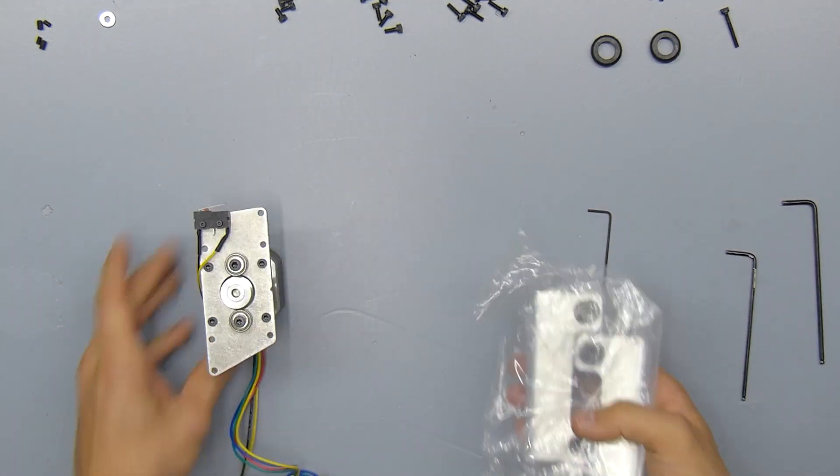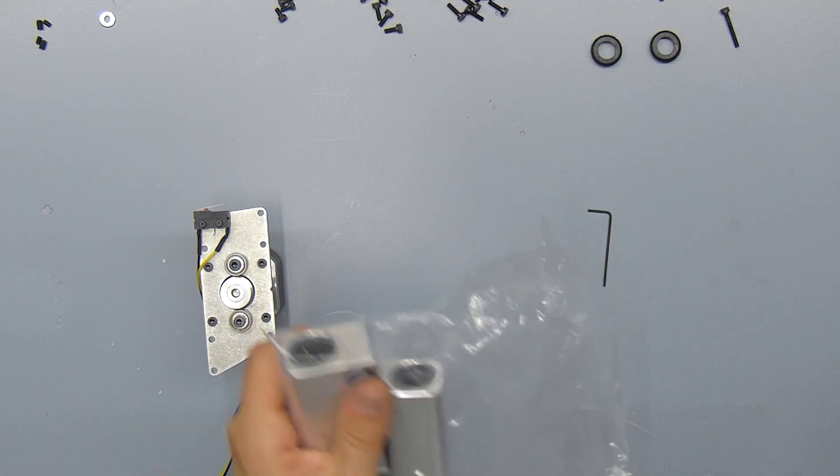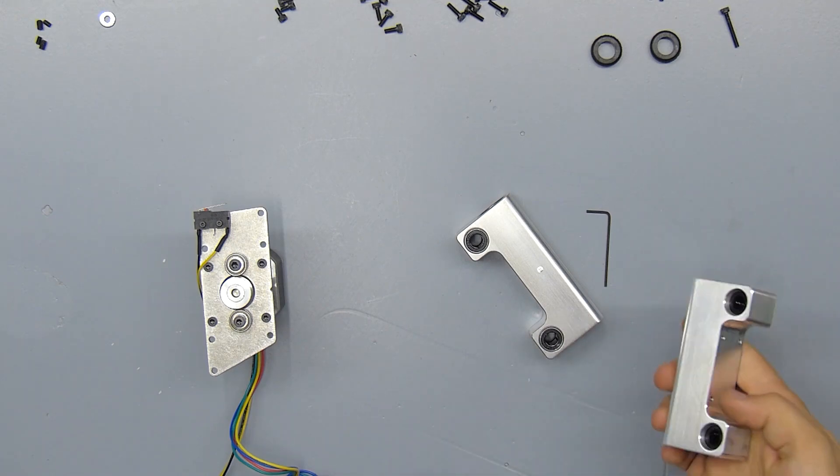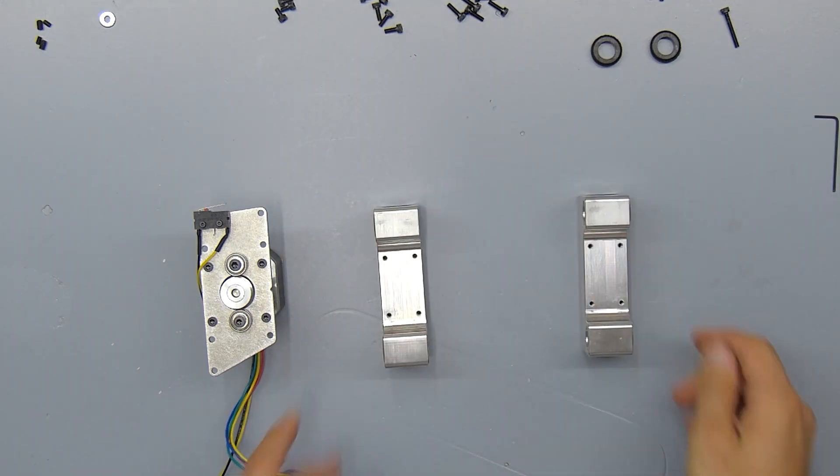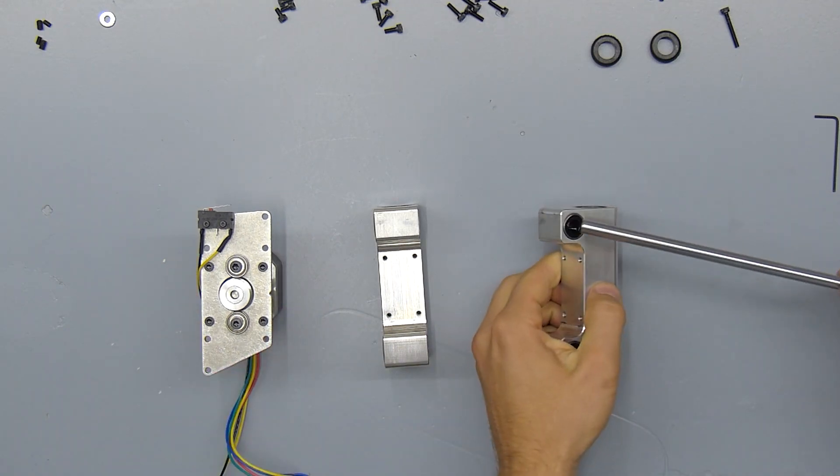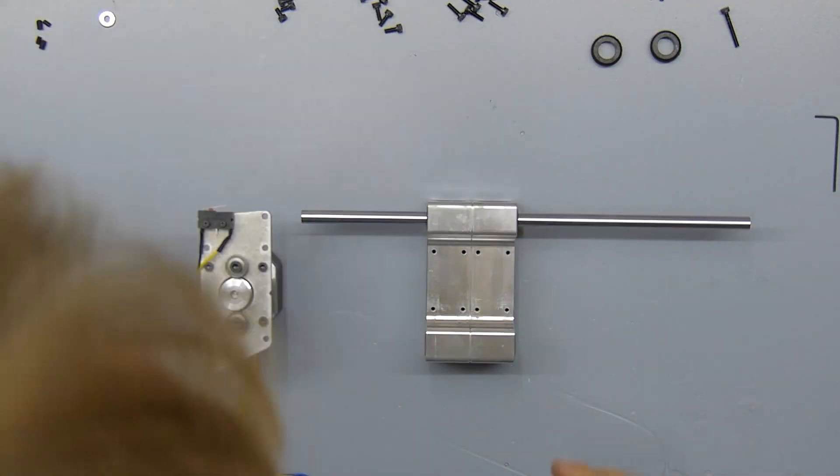Next we'll install this whole assembly onto the bearing box, and as you might notice, each of the blocks is marked with a dimple and I'm going to orient these dimples away from each other to make the y-axis a bit stiffer. Insert the remaining 8mm rods to align the blocks together.